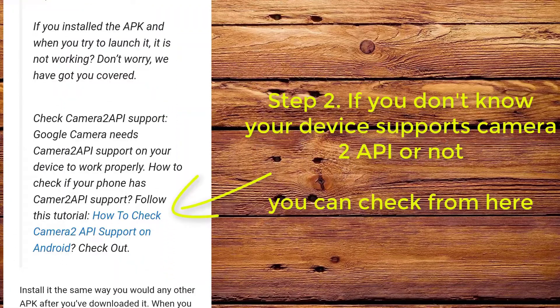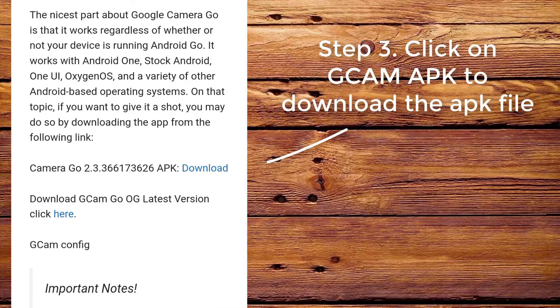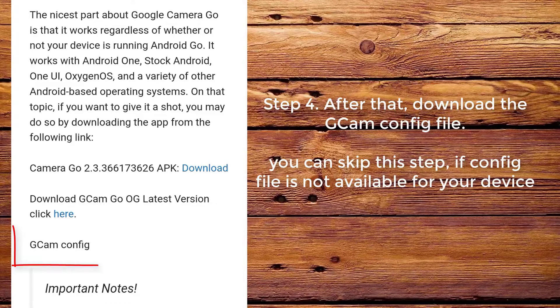Step 2. If you don't know whether your device supports Camera2 API or not, you can check from here. Step 3. Click on CamApp to download the app file.